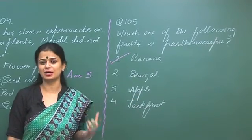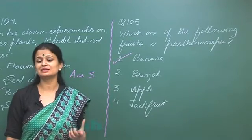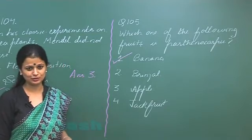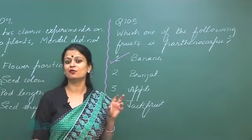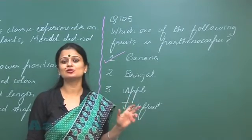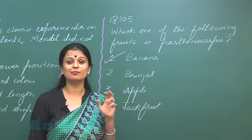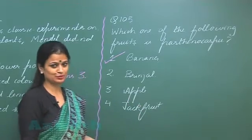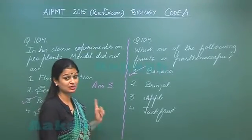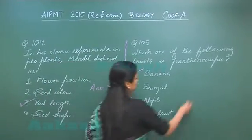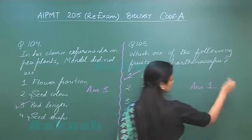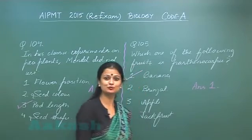You should not confuse it with apple — apple is not a parthenocarpic fruit. Apple is a pseudocarp, that is, a false fruit, because in its formation there is involvement of the thalamus along with the ovary. So apple is a false fruit but not a parthenocarpic fruit — it is a pseudocarp. Therefore, for question 105, the right option is option number 1.